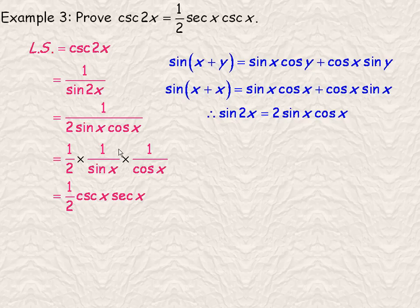And it doesn't matter that the order is different. This reciprocal is actually the cosecant, and this reciprocal is actually the secant. And so it doesn't matter whether I say csc x sec x here or sec x csc x. It is the same thing because it's just multiplication.